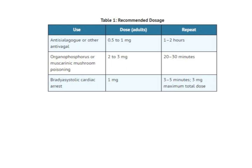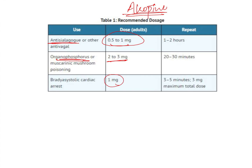Regarding atropine dosing: as an anti-sialogogue (to reduce excessive salivation), the dose for adults is 0.5 to 1 milligram. In organophosphorus poisoning, you give 2 to 3 milligrams, repeated every 20 to 30 minutes. For cardiac arrest due to bradycardia, you give 1 milligram every 3 to 5 minutes — administer 1 milligram, wait 5 minutes, check the response, and if the patient is not responding, give 1 more milligram.